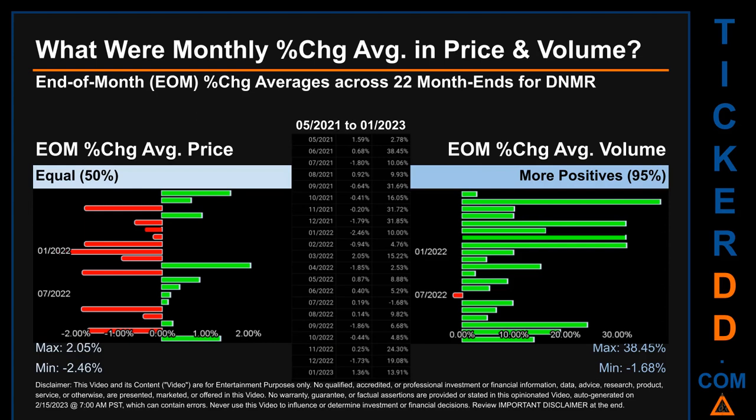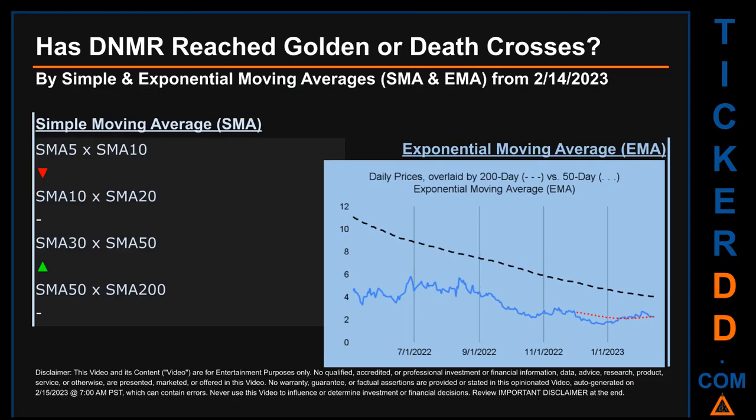Price saw an end-of-month maximum of 2.05% in average percentage change, along with a minimum of minus 2.46%. For volume, the maximum and minimum monthly percentage changes were respectively 38.45% and minus 1.68%. The minimum percentage change in volume is actually a positive percentage change in price.